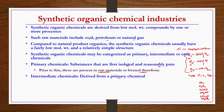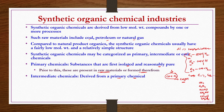Intermediate chemicals are derived from primary chemicals. For example, CO plus H2 synthesis gas can be considered a primary chemical, and methanol derived from it may be an intermediate, because methanol can be taken as a product itself or further converted into other chemicals like formaldehyde.